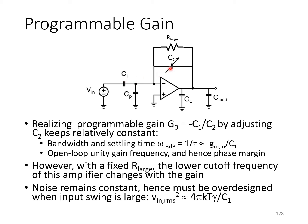Now, if you change C2, notice that the bandwidth and settling time of the op-amp circuit, the overall closed-loop bandwidth and settling time, depends on the ratio of GM of the OTA divided by C1. So, that's kept constant when you adjust C2. Moreover, the open-loop unity gain frequency is also kept constant, and as a result, the phase margin is kept constant.